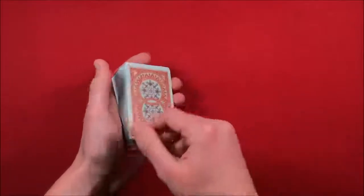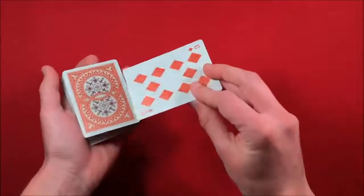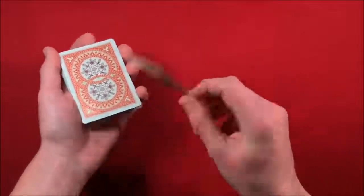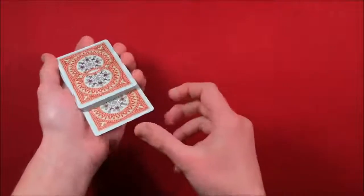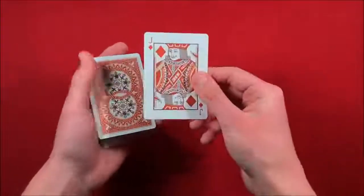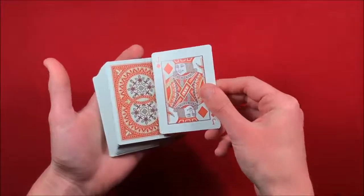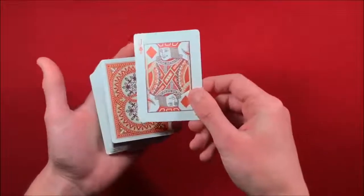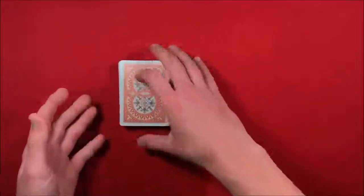And now once you do the double lift you can take their card - in this case the jack of diamonds - when you do your double lift you're putting that ten or that indifferent card into the middle and their card is still going to be on top. So at this point their selected card, whatever it's going to be, is still going to be on top of the deck.